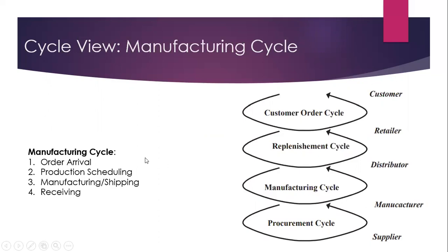Then, Manufacturing Cycle. The steps include Order Arrival, Production Scheduling, Manufacturing and Shipping, and Receiving.